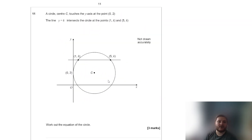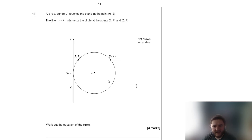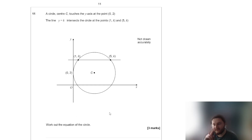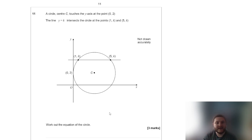Let's look at question 11. A circle with centre c touches the y-axis at (0, 2) and the line y equals k intersects the circle at (1, k) and (5, k). Work out the equation of the circle. The phrase 'work out' implies there's more than just reading off the answer — some maths is required.